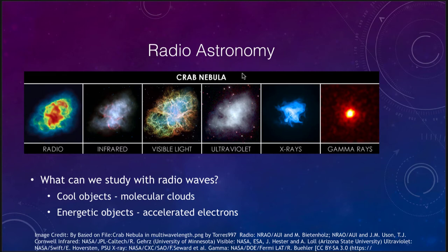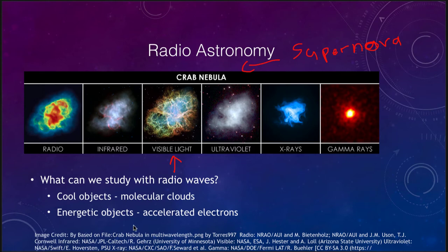This shows what is called the Crab Nebula, which is a supernova remnant — a supernova that occurred about 1,000 years ago. When we look at it in visible light, this is the kind of image we will get. However, if we look at it in radio waves, we get somewhat similar but different intensities — the red shows the highest level of radio intensity, which is not necessarily where the brightest visible light is coming from. When we also look at it in other wavelengths like X-rays, gamma rays, ultraviolet, or infrared, we get a different picture.